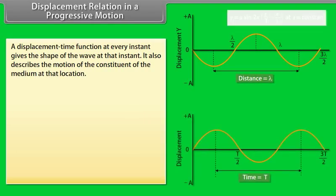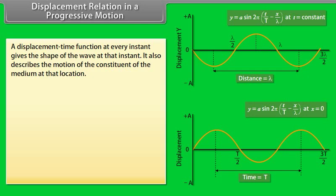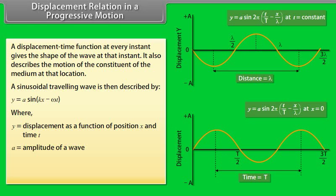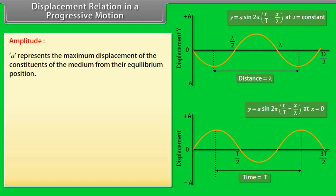Displacement relation in a progressive motion: A displacement-time function at every instant gives the shape of the wave at that instant. It also describes the motion of the constituents of the medium at that location. A sinusoidal traveling wave is described by y = A sin(kx − ωt), where y is displacement as a function of position x at time t, A is the amplitude of the wave, ω is the angular frequency, and k is the angular wave number. Amplitude A represents the maximum displacement of the constituents of the medium from their equilibrium position.